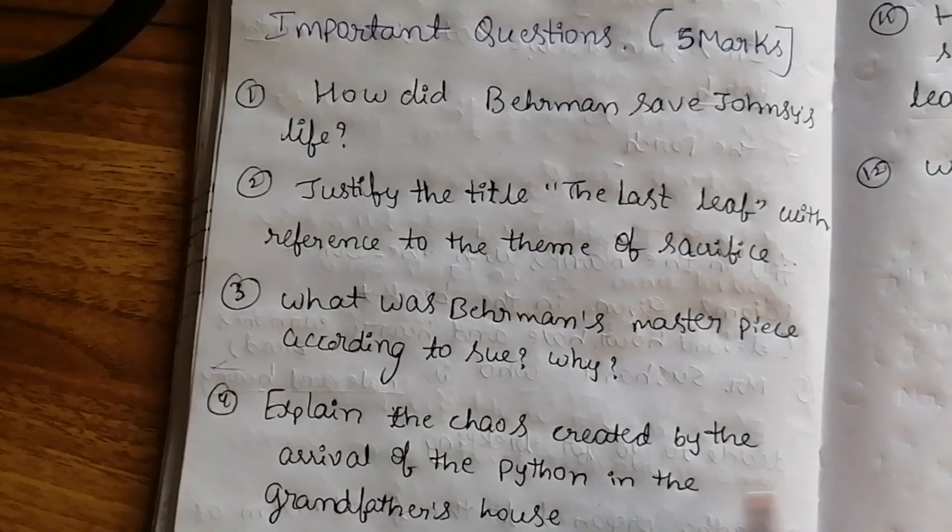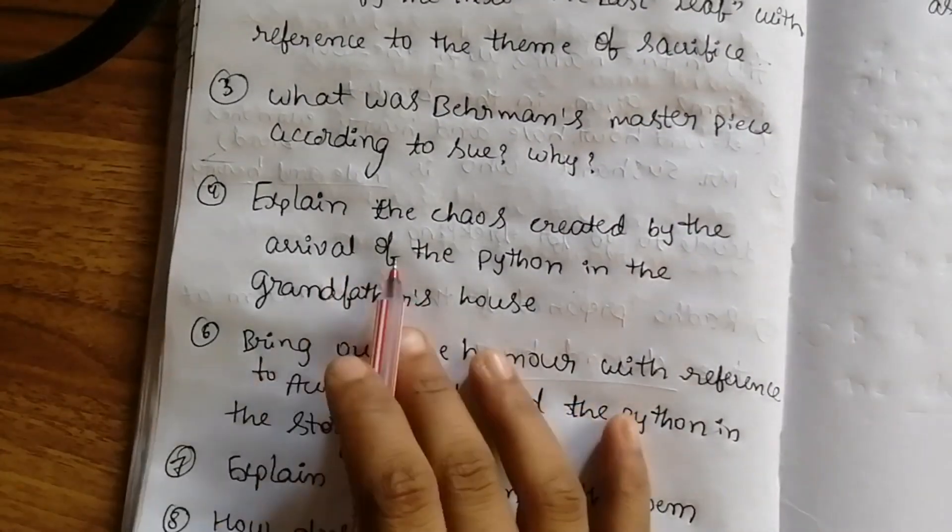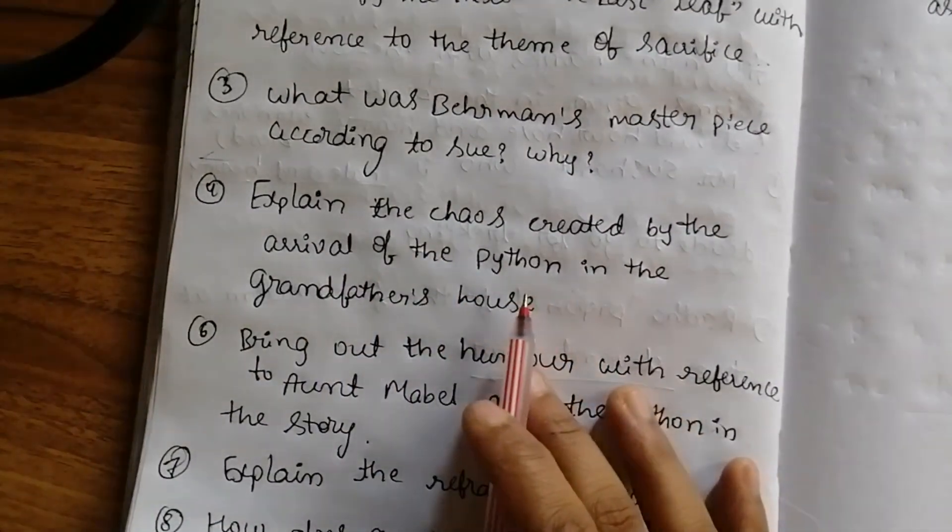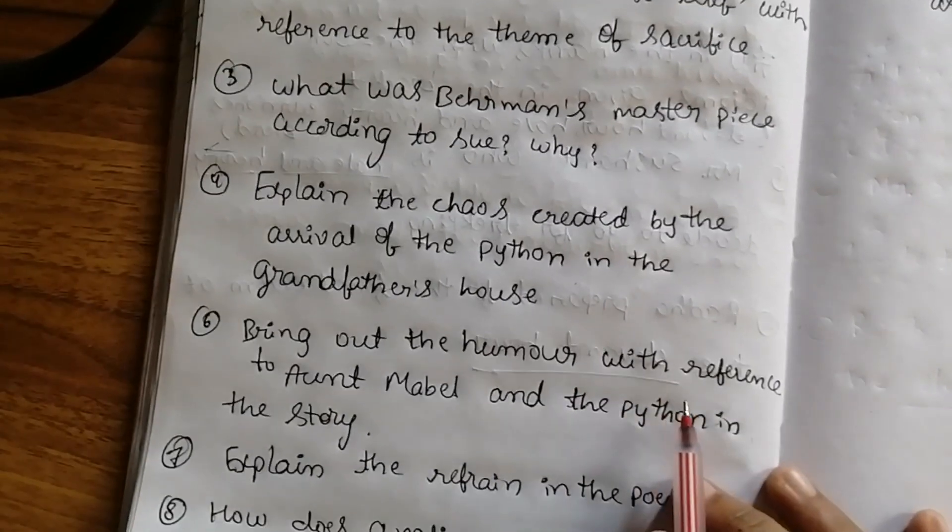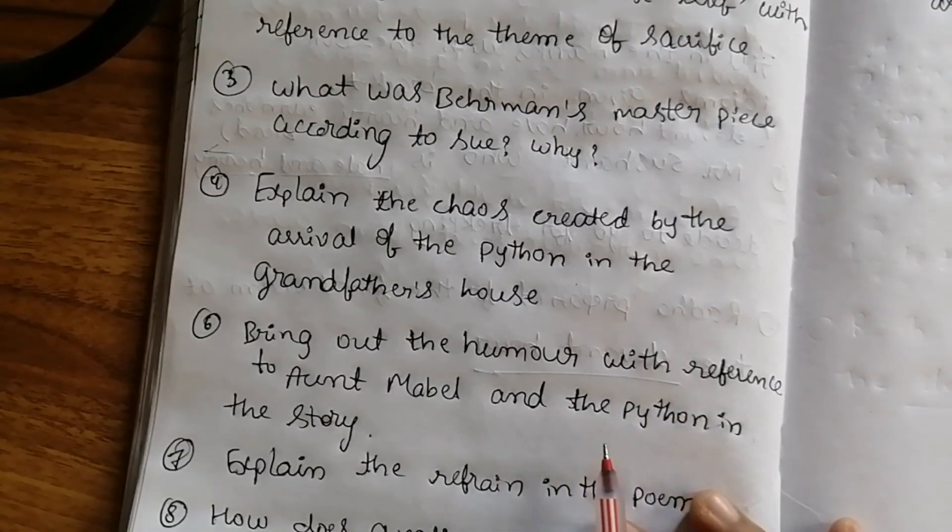Next question: Explain the chaos created by the arrival of the python in the grandfather's house. Bring out the humor with reference to Aunt Mabel and the python in the story.